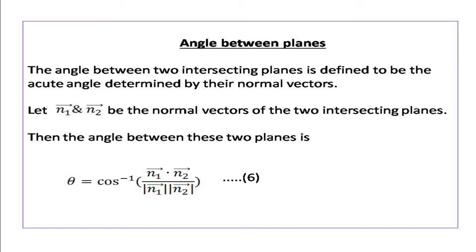Next, we are going to see how to find the angle between two planes. The angle between two intersecting planes is defined to be the acute angle determined by their normal vectors. Let vector n1 and vector n2 be the normal vectors of the first and second plane. Then the angle between these two planes is theta equal to cosine inverse of vector n1 dot vector n2 divided by magnitude of vector n1 into magnitude of vector n2.